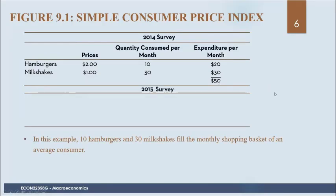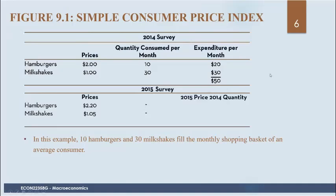Now suppose we have data from 2015 with new prices — hamburgers increased by 20 cents and milkshakes by 5 cents. When calculating the consumer price index, we hold the quantities constant in a particular year. In this example, we hold the quantities constant at 2014 levels. So in 2015, calculating the cost of that same basket gives us $53.50.